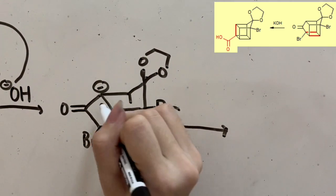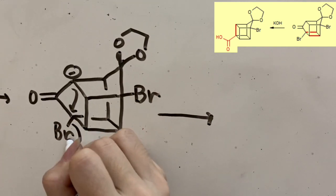Next, this negative charge will attack this carbon and kick the bromide out.